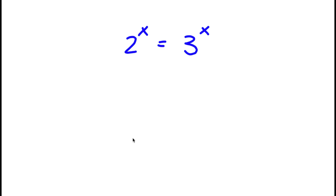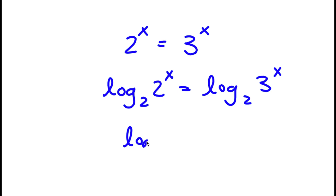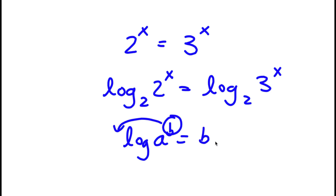So in this problem I have 2 to the power of x is equal to 3 to the power of x. The first thing I'm going to do is take log base 2 on both sides. So I have log base 2 of 2 to the power of x is equal to log base 2 of 3 to the power of x. Now if I have something in the form log base 2 of a to the power of b, I can move the exponent to the front — so this equals b times log base 2 of a.